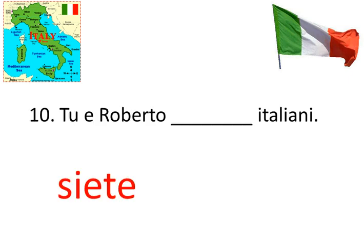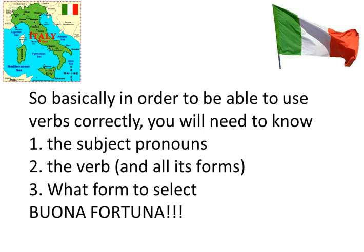So basically, in order to know how to pick the right verb, you need to: one, know the subject pronouns perfectly — which order they are, which ones are first person, second person, third person, singular, plural. Two, know the verb — I'll usually give you the verb that you have to fill in, whether it's essere or later ones that you will learn. And then, what form to select. Remember, if it doesn't specifically state the subject and it says a name instead, you've got to pick what subject pronoun that would have been — and that's how you figure out the forms of the verb to choose. Buona fortuna and we'll see you next video.